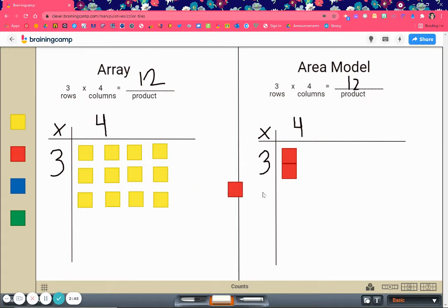Since area models are basically going to be closed rectangles or squares, it's always closed. They're always going to be squares or rectangles, while arrays can be any type of object arranged in rows and columns. In this case, it's squares. In the future, you can see things like cookies on a sheet that are arranged in rows and columns. Area models will always be in squares or rectangles, always a quadrilateral.